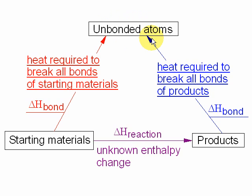lots of unbonded atoms. You could do the same with the products, break all the bonds of the product by adding up all the average bond strengths, and you would end up with the same number and same type of unbonded atoms.